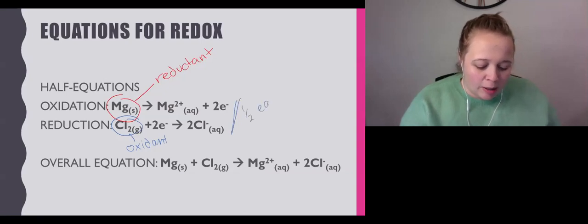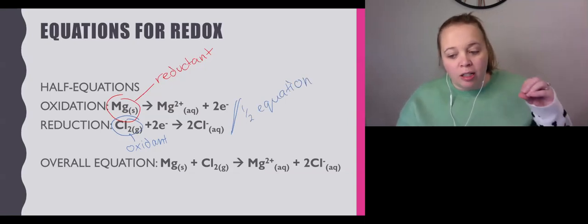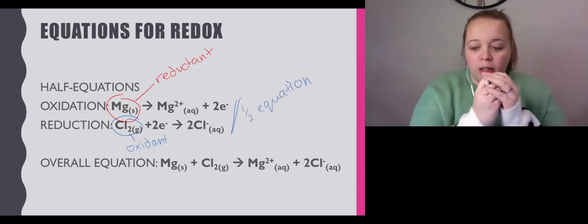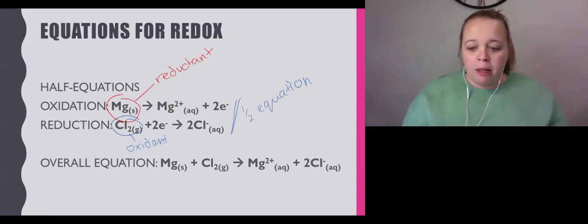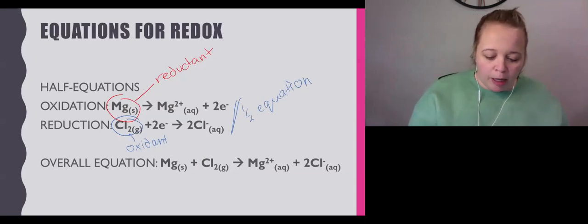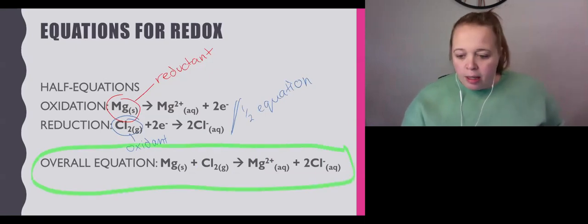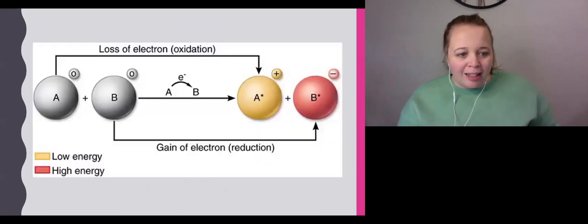We call these half equations because they show half of what's going on. There must always be an oxidation reaction occurring simultaneously with a reduction reaction because the electrons have to be transferred from one to the other. Hence, our overall equation is this big one. As the electrons have been produced and then consumed, they cancel each other out.